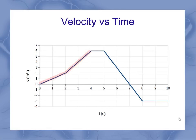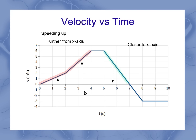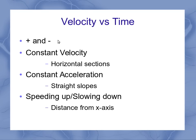We can also look at whether we're moving further away from the x-axis or closer to it. Moving further away from the axis means you're speeding up, and moving closer to the axis means you're slowing down. So a segment moving further away from the axis is speeding up — just speeding up in the negative direction. Remember, speed doesn't care about direction, only whether you're going faster or slower. To summarize: positive and negative depends on direction; horizontal sections are constant velocity or zero acceleration; straight slopes are constant accelerations; and speeding up or slowing down is represented by your distance from the x-axis.